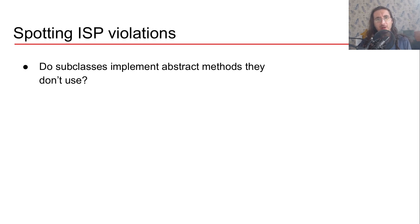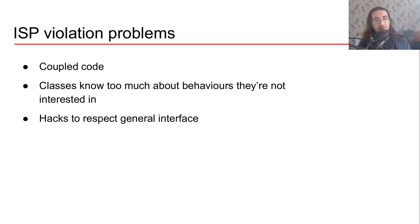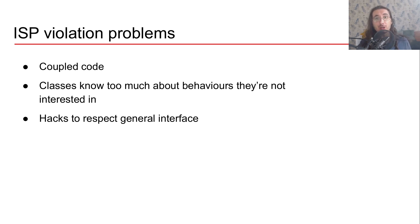What's the problem with having an ISP violation? It turns out that if you have this type of violation, your code is going to be coupled — tied together. Also, classes know too much about behaviors they are not interested in because they don't use them, and then you have to implement really weird and bad hacks to get around this problem. We'll see all of these issues in the Python example in a second.